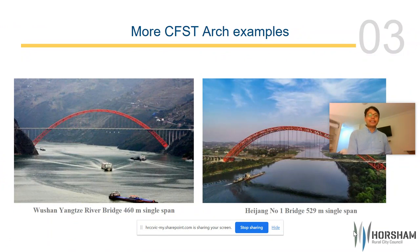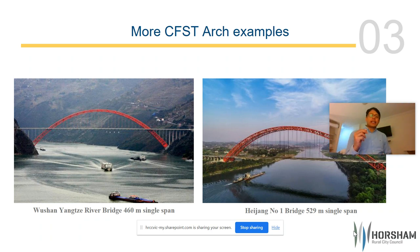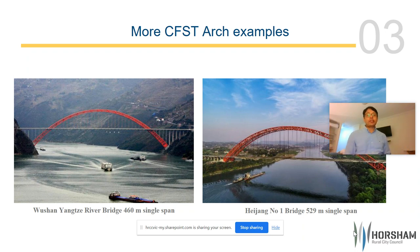This is the Wushan-Anji River Bridge, which is a 460-meter span. And that is the He-Chen Number One Bridge, which is around a 530-meter single span. You can see the beauty these structures create. And as I mentioned, if you correctly carry out proper maintenance — painting of the steel structure and corrosion protection — then these bridges last forever.